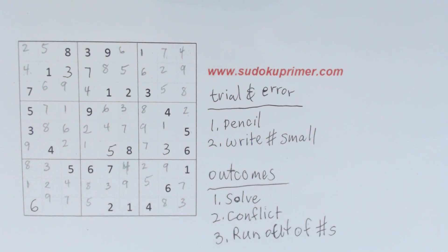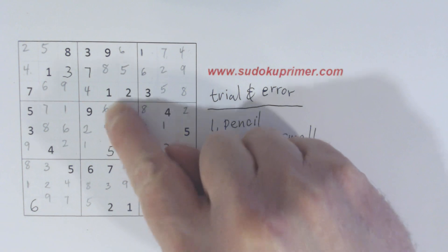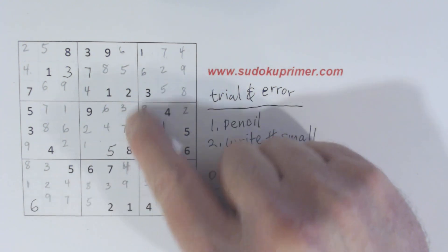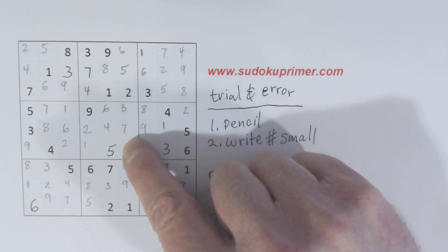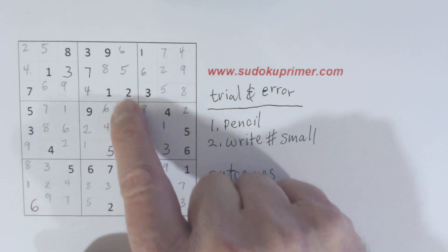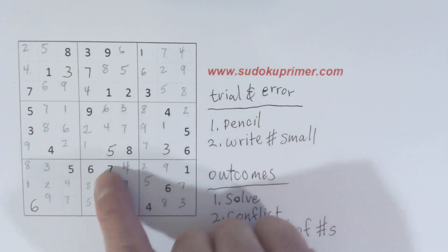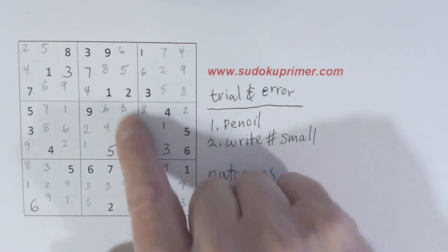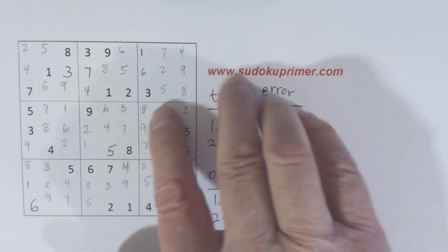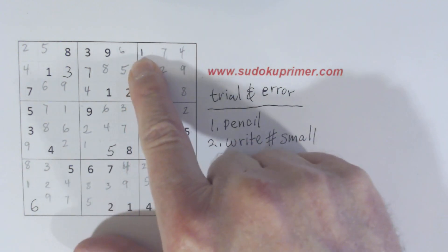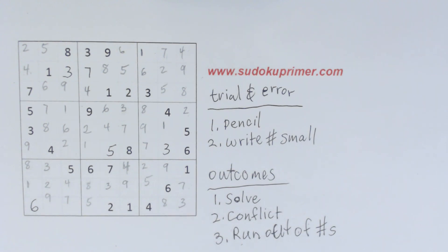With trial and error, we were able to solve this puzzle. It took a couple of tries. We determined that sixes go here when we ran into a conflict trying the sixes in the other column — we had six-seven twins here and a conflict with the four, so we knew the six had to go in this column. Since we had a conflict, we erased all the pencil numbers and started over again with the one up here. And with that one, we were able to solve it. That is the trial and error technique. Thank you for watching — hopefully that helps you understand what trial and error is and how it works.